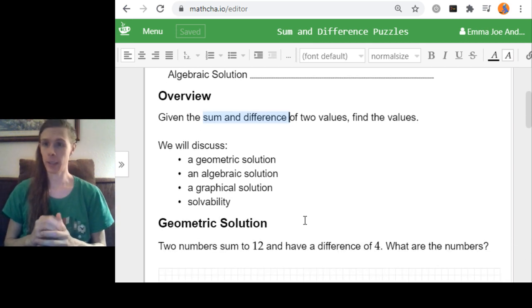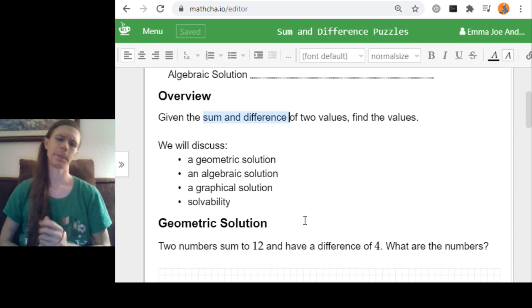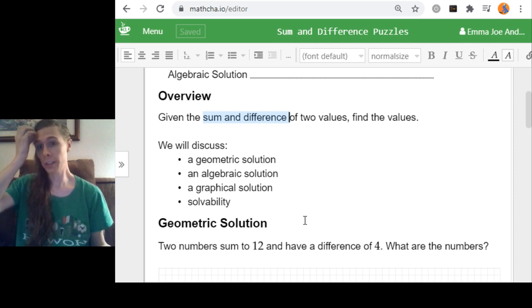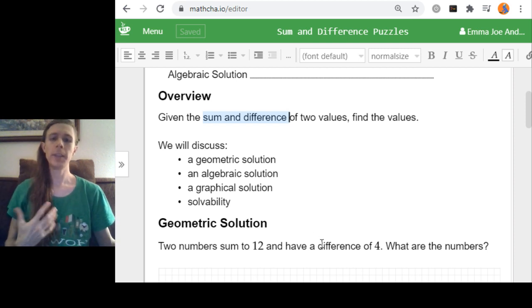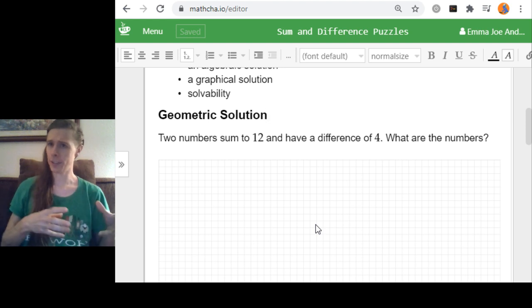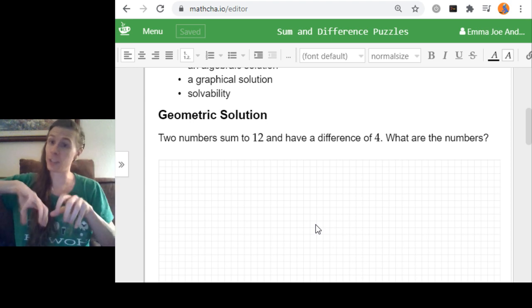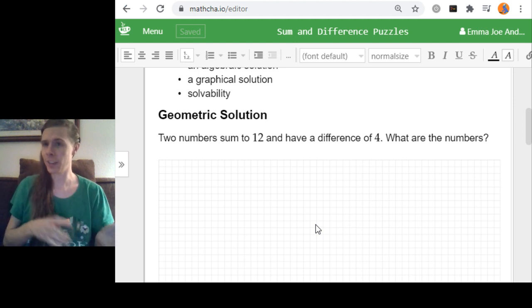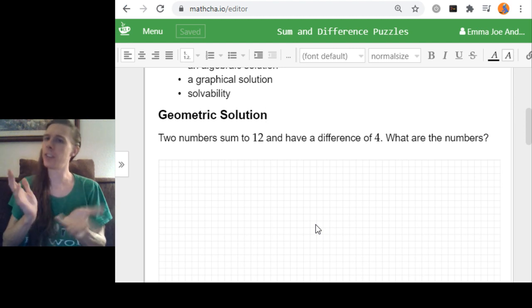All right, so with those things said, let's hop into the geometric solution. So I'll give a concrete example and then generalize it. For a specific concrete example, let's say two numbers summed to 12 and have a difference of 4, and you're asked, what are the numbers? To be geometric here, and since we're dealing with sums, it's best to think of them adding as lengths. Typically, geometric addition is a length plus a length, or an object next to an object. Whereas geometric multiplication is area, and then you're trying to make rectangles and stuff.